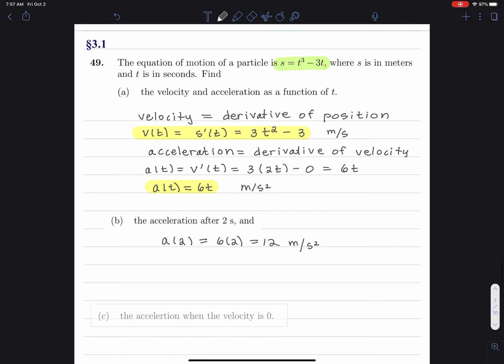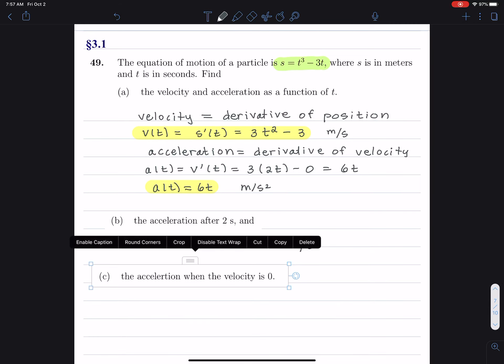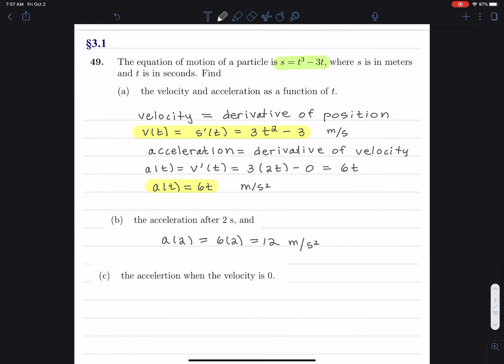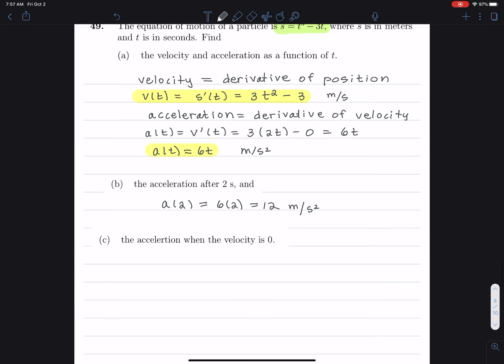All right. Then I go on to part C, and part C says, find the acceleration when the velocity is 0. So that's going to require us to answer the question, when is velocity 0?